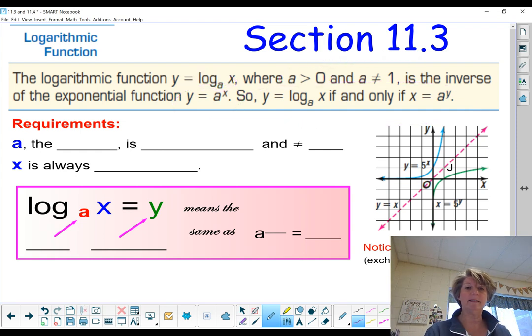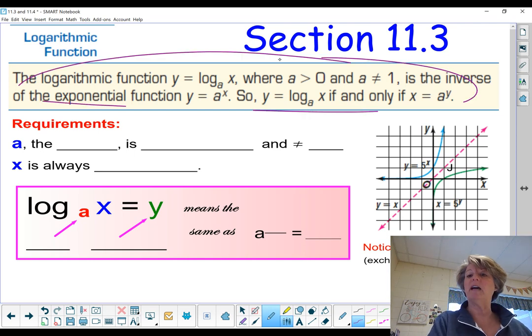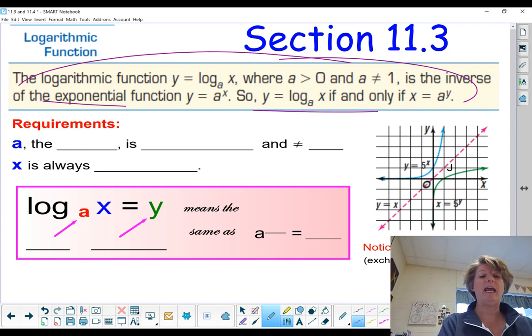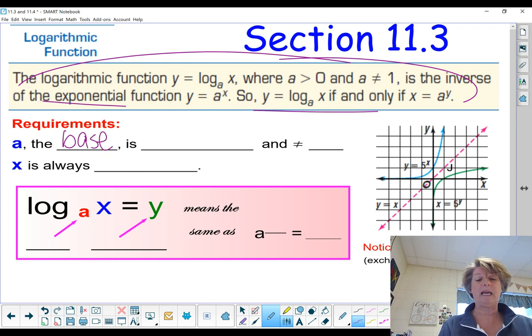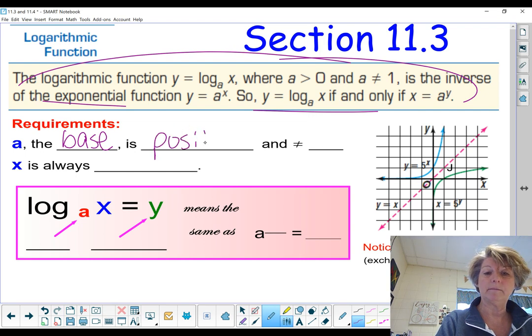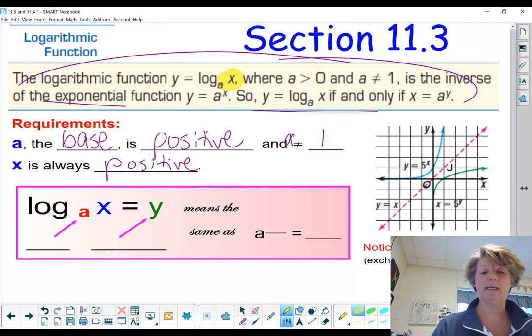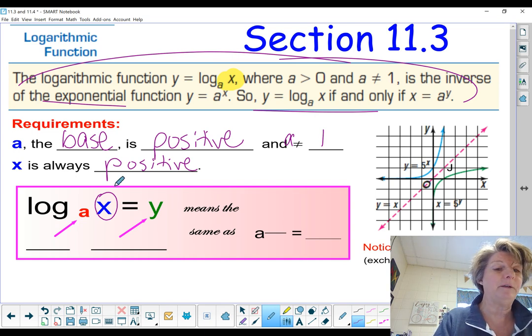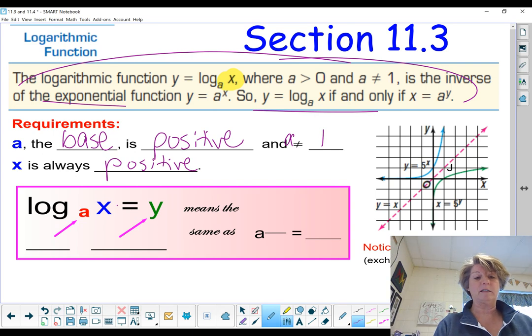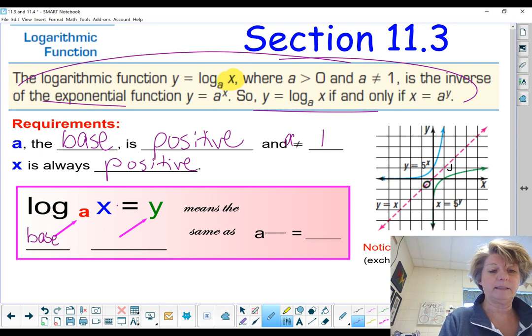Some of the requirements. As we read that definition of a logarithmic function, one of the requirements is that a is referred to as the base. And base a has to be positive, and it cannot equal 1. X is always a positive quantity. Now let's go look and see where is this x that they're talking about. Right there is that x. So when I see a log of something, I should see that this value there is always positive. If it's not, you can't do the problem. It is undefined.